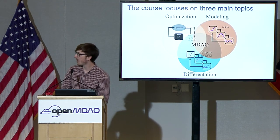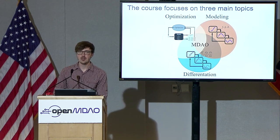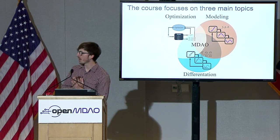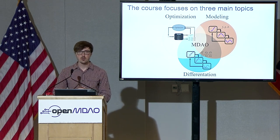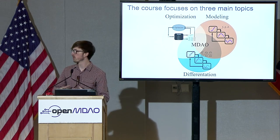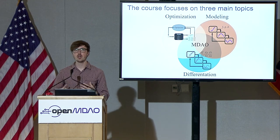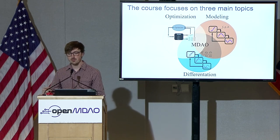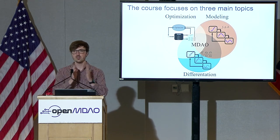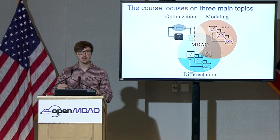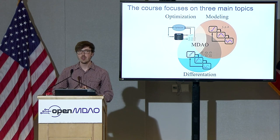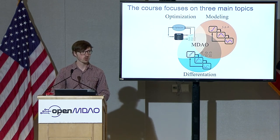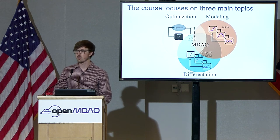Throughout the course, I talk about three main subtopics whose intersection is MDAO. This graphic comes from a previous blog post on the OpenMDAO website. These three topics are optimization, modeling, and differentiation. You need to know how to model your actual physical system. If you're doing gradient-based design optimization, you need differentiation — you need the gradients. And if you're trying to change the design of these systems to understand what gains you can get from new technologies, you need to optimize them. Throughout the course I often reference which subtopic a lesson focuses on. The intersection of all three is the really interesting, cool part.